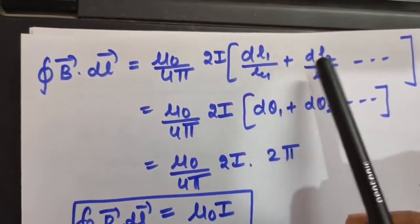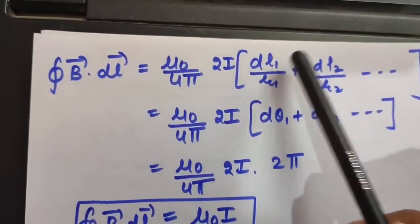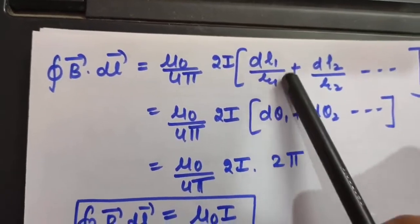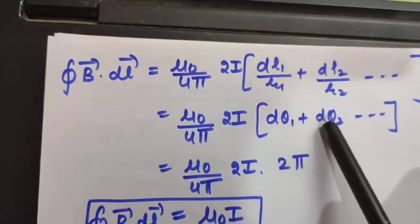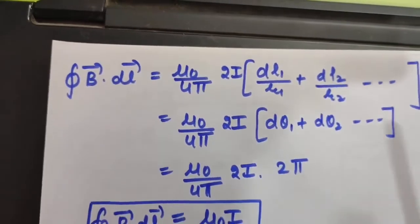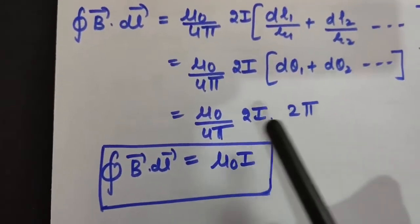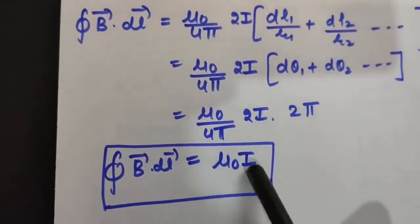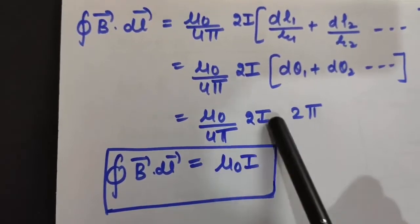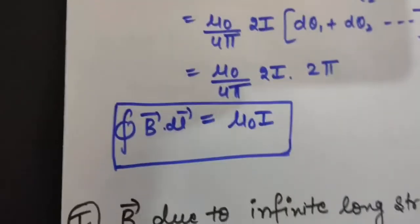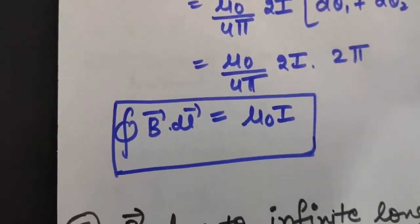Calculating the total line integral: ∮B·dl = B₁dl₁ + B₂dl₂ + … = (μ₀/4π)(2I)(dl₁/r₁ + dl₂/r₂ + …). Since dl/r = arc/radius = angle, this equals (μ₀/4π)(2I)(dθ₁ + dθ₂ + …) = (μ₀/4π)(2I)(2π) = μ₀I. This proves Ampere's Circuital Law: ∮B·dl = μ₀I.